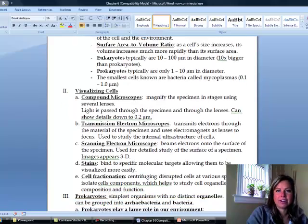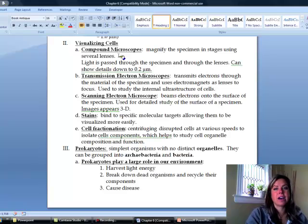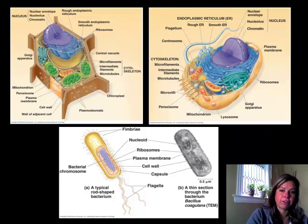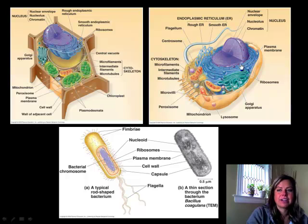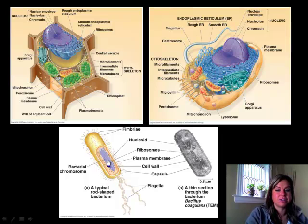If we want to look at cells under the microscope, there are a couple of ways to do it. Here at CCD we have a compound microscope, which magnifies the specimen using lenses. Looking at this picture, we can see a plant cell, an animal cell — both eukaryotes with lots of organelles inside — and on the bottom a bacterial cell, or prokaryote, which is smaller and simpler with just DNA floating around and a couple of ribosomes.